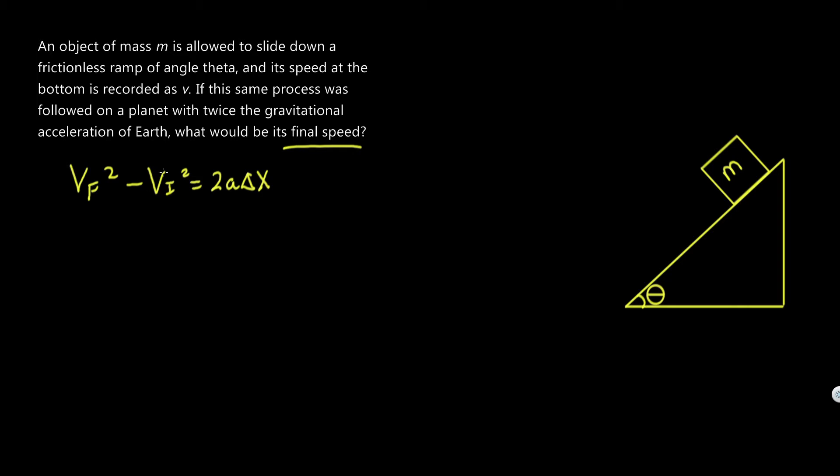We know here that the initial velocity is actually just zero, because as it said, it's allowed to slide down, and its initial velocity would thereby be zero. So that leaves us with v final squared equals 2a delta x.